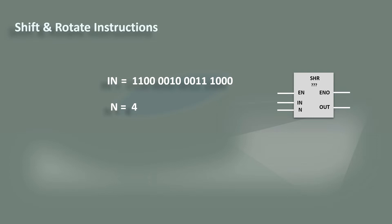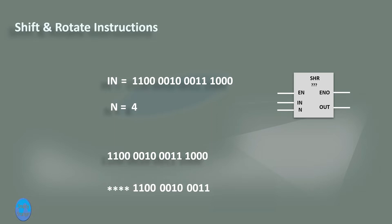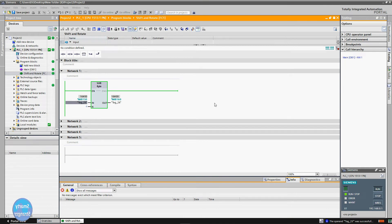Consider an example showing how the instruction shifts the input value bit by bit to the right. Here the N parameter is equal to 4, meaning 4 bits will be moved to the right. When we move 4 bits toward the right, their next bits fill the space bit by bit. All spaces are filled by their next bits; the last 4-bit space is left, and since the last bit is signed, we fill that space with ones.